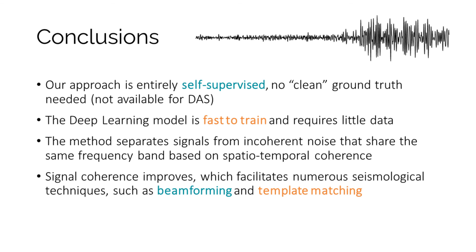In conclusion, our proposed denoising method is greatly suitable for DAS data because it is entirely self-supervised and so requires no clean ground truth, which is not available for DAS. Also the model is fast to train and requires very little data. After applying the model to real-world data we see that it is able to separate earthquake signals from incoherent noise that shares the same frequency band, and that the signal coherence increases. This will aid numerous seismological analyses including micro earthquake detection, beamforming, template matching, and many more.